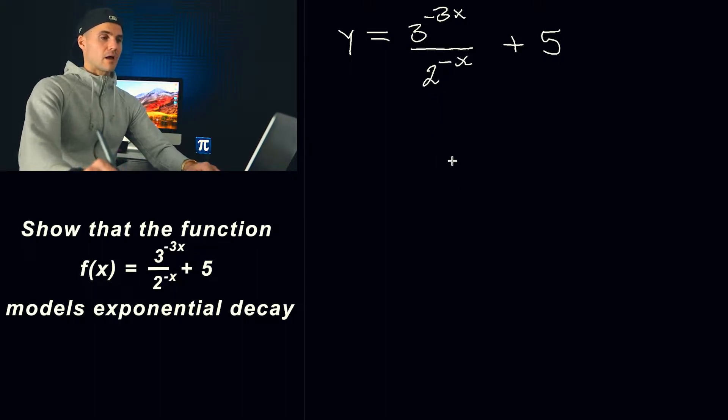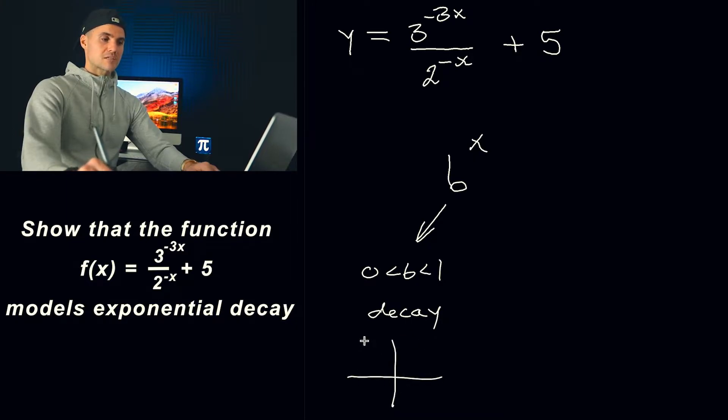Now before we do that I want to, if you have a parent function b to the power of x like this, if this base is between 0 and 1 then we know that it's a decaying function or a decreasing function. Basically the exponential function is going to look like this.